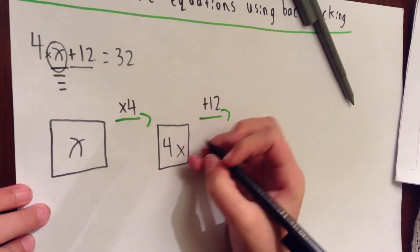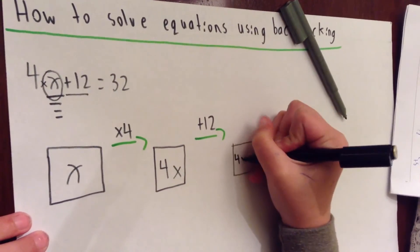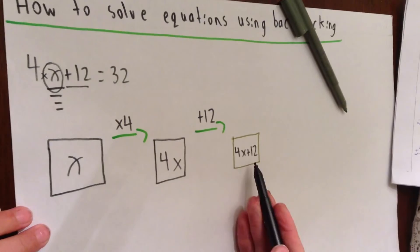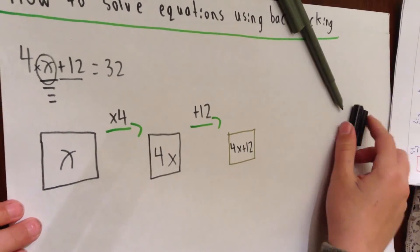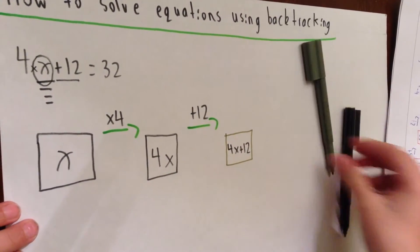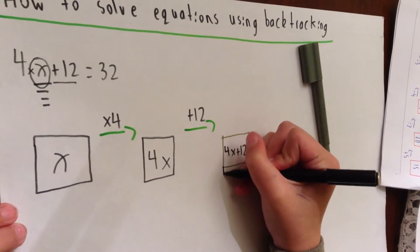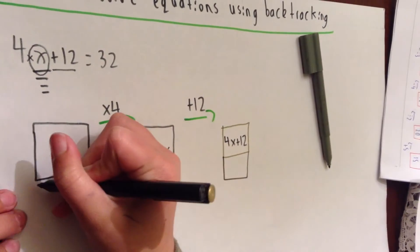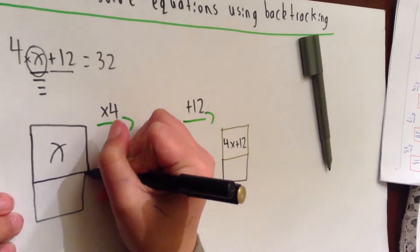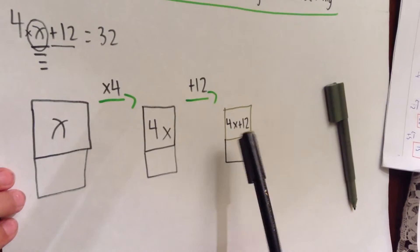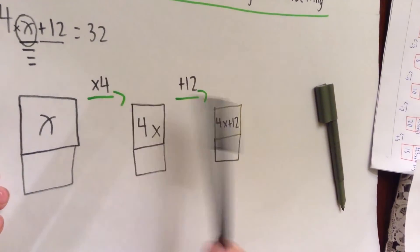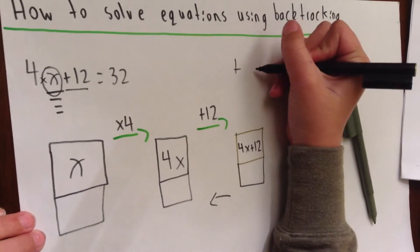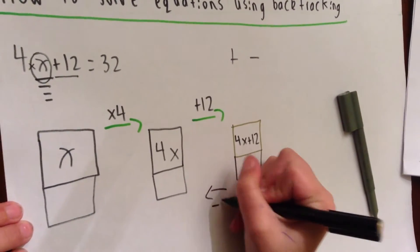What's 4x plus 12? We just write it as an equation. Now we're trying to find the answer to x, so now we need to do a process called backtracking. First, we draw another box under all of the boxes. Backtracking means going backwards, so we do the opposite of these operations. What's the opposite of a plus? It's a minus. So now we write minus 12.